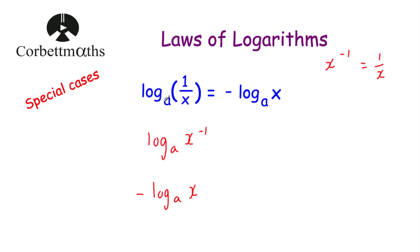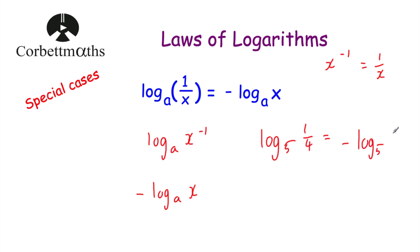So log base a of 1 over x equals minus log base a of x. That might come in useful — for example, if we had log base 5 of a quarter, instead of writing log base 5 of a quarter, we can write minus log base 5 of 4. And that might come in useful for some questions.